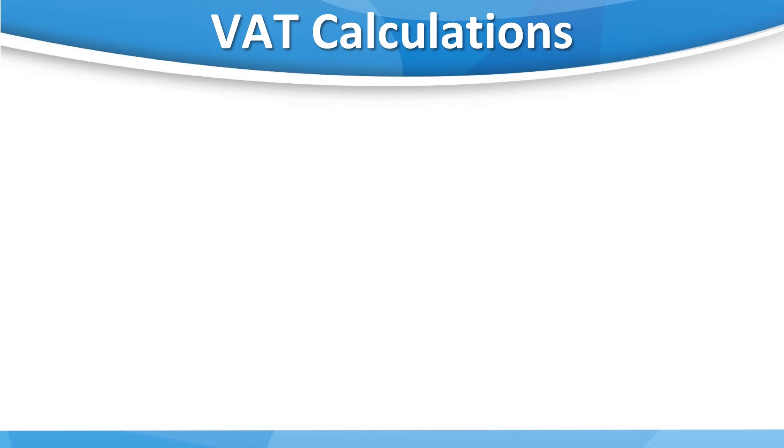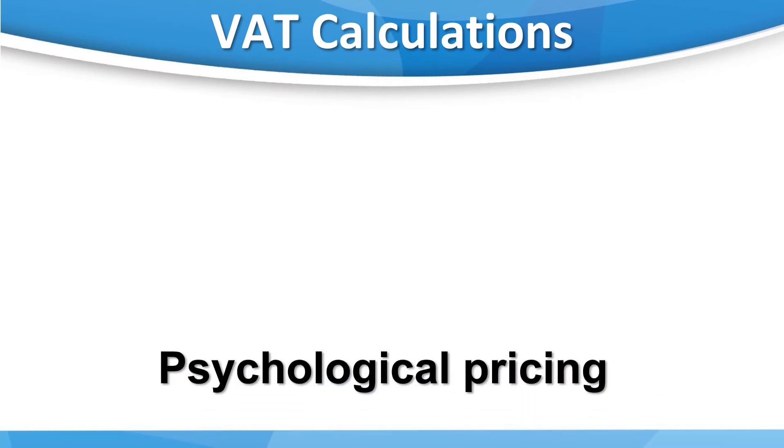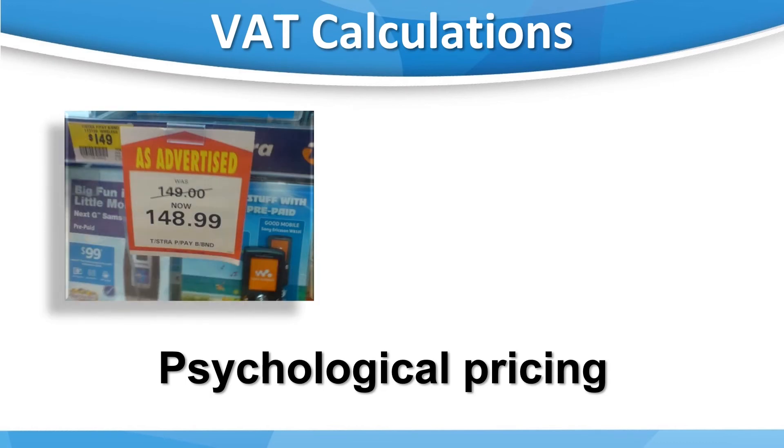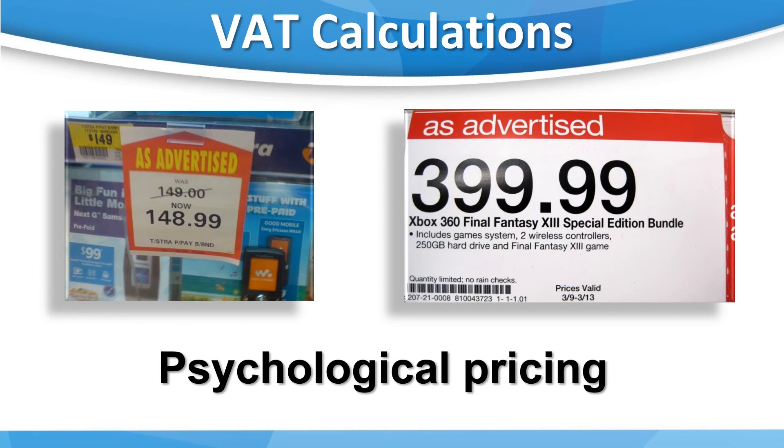We have just one more calculation to look at in this video. Many businesses use psychological pricing. This is based on the theory that certain prices have a psychological impact. Retail prices are often expressed as odd prices, and there's evidence that consumers perceive odd prices as significantly cheaper than they actually are. For example, £399.99 may be associated with spending £300 rather than £400.